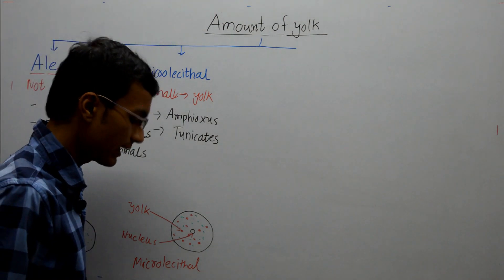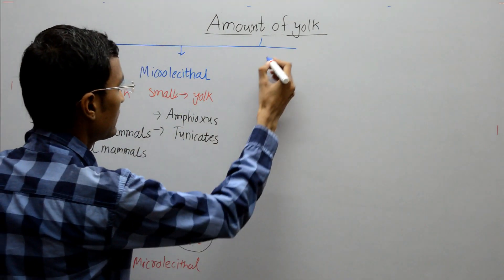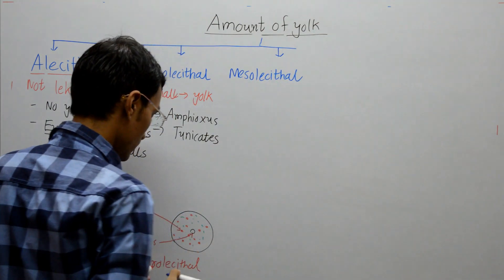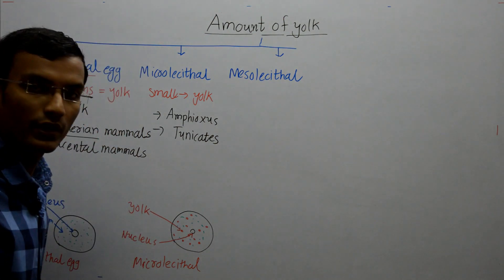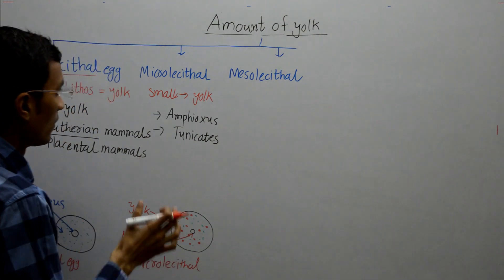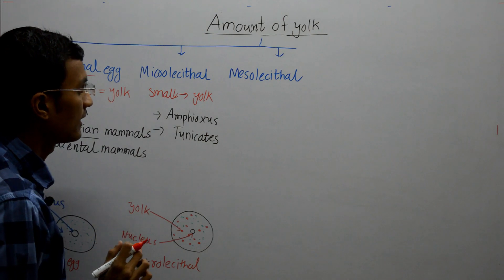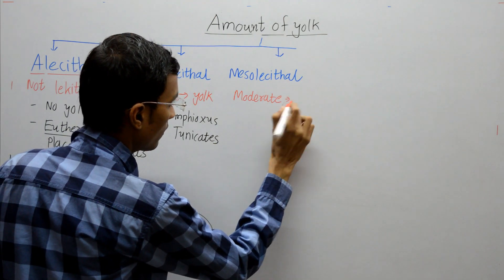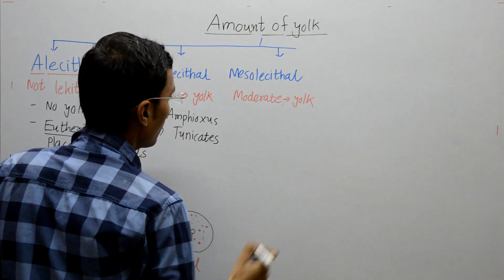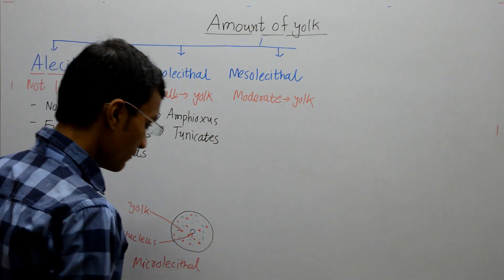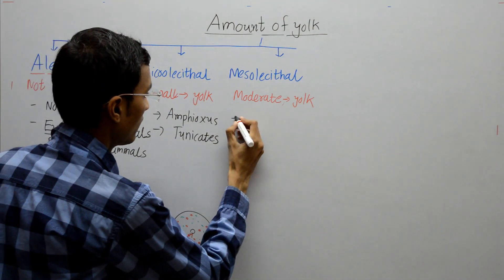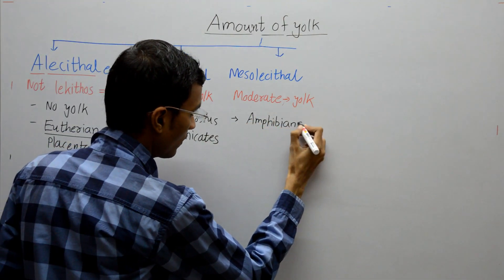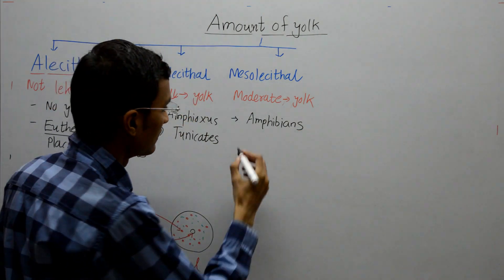The next type is the mesolecithal egg. This egg contains a moderate amount of yolk — slightly more than the microlecithal egg.